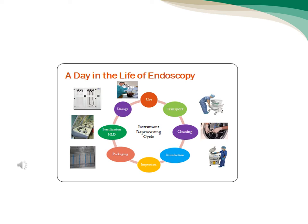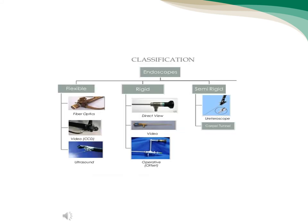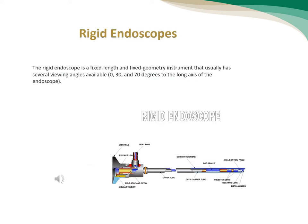We can divide the endoscopy into flexible endoscopy, rigid endoscopy, and semi-rigid endoscopy. Rigid endoscopy is a fixed geometry instrument that usually has several viewing angles available.